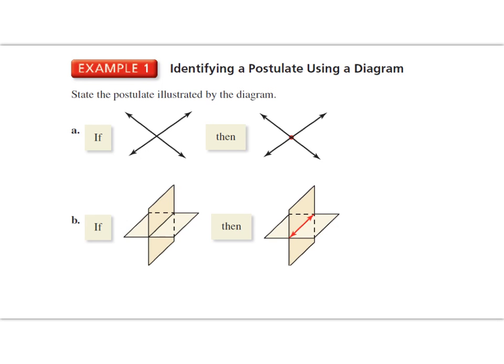All right, now let's practice going from our if-then illustration statement to words. So let's consider example A. If – and then just look at your picture, how would you describe what's going on? Don't put more into the picture than what you see.